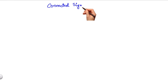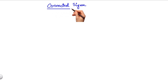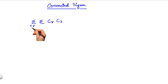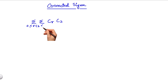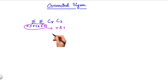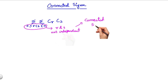Let's move to a more difficult problem in double summation: the connected sigma problems. Let's see an example. What is the value of the double summation of CrCs, where r is greater than or equal to 0 and less than s, which is less than or equal to n? As you can see, because of this connection between r and s, they are not independent, and such problems are called connected sigma problems.